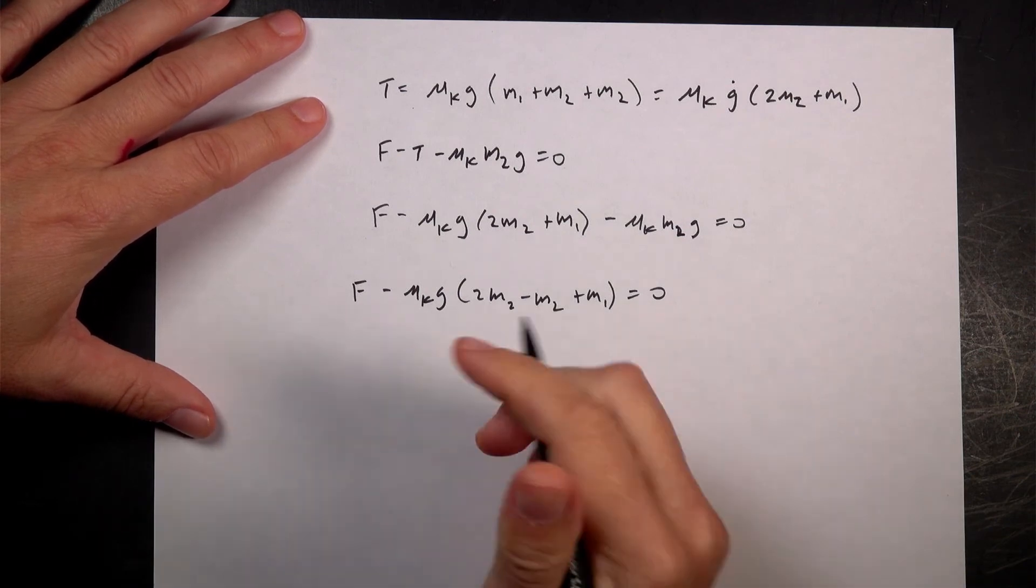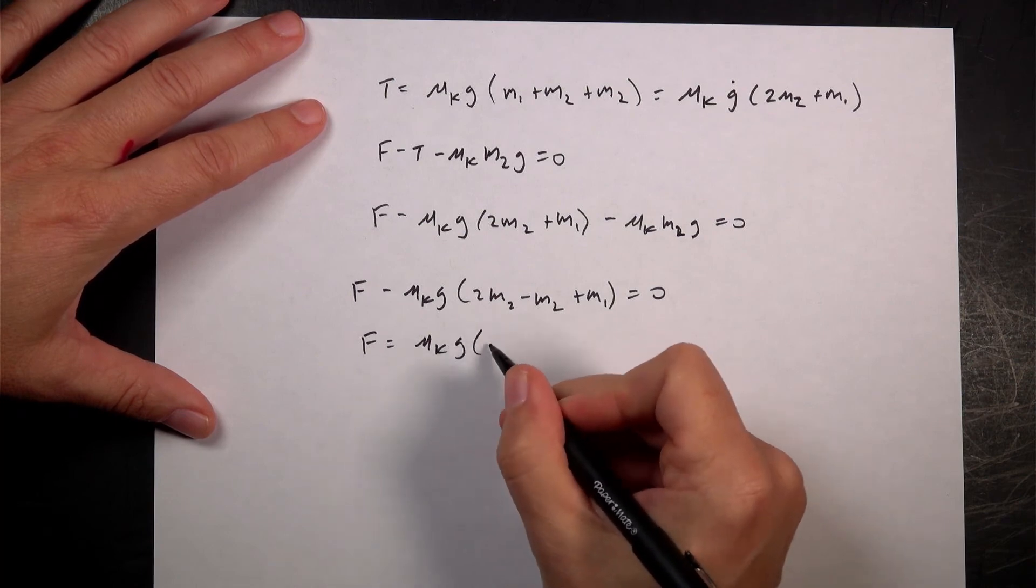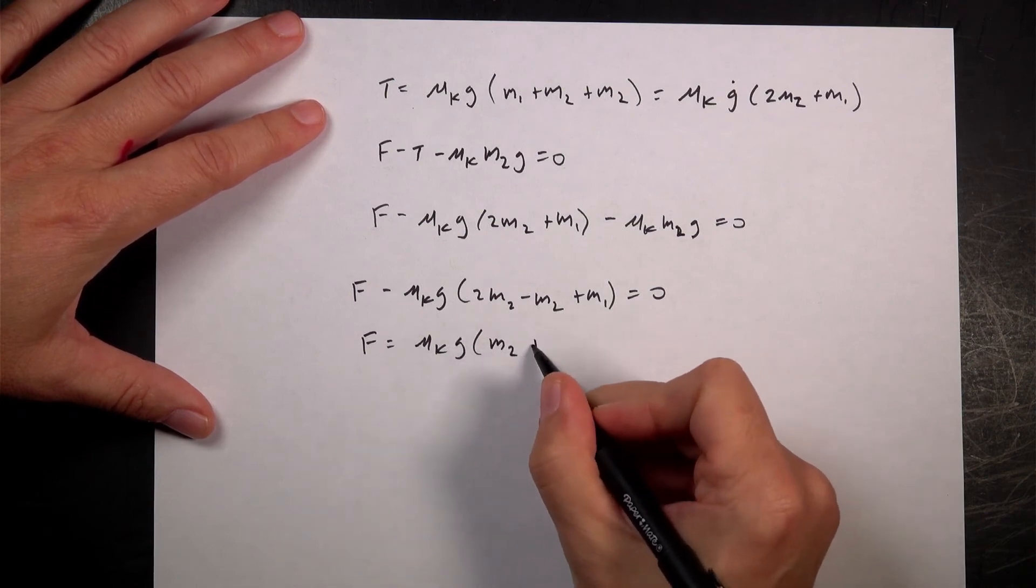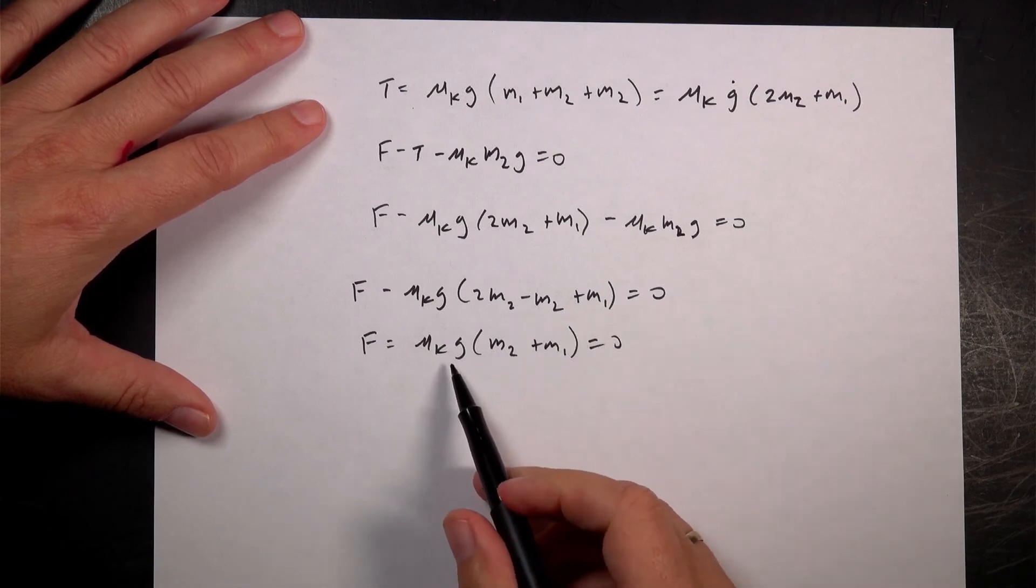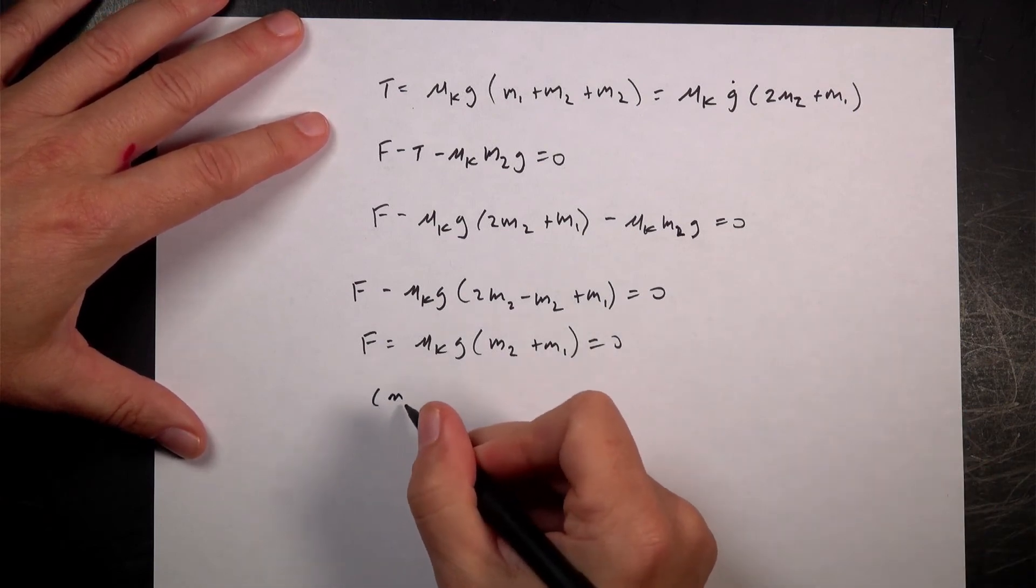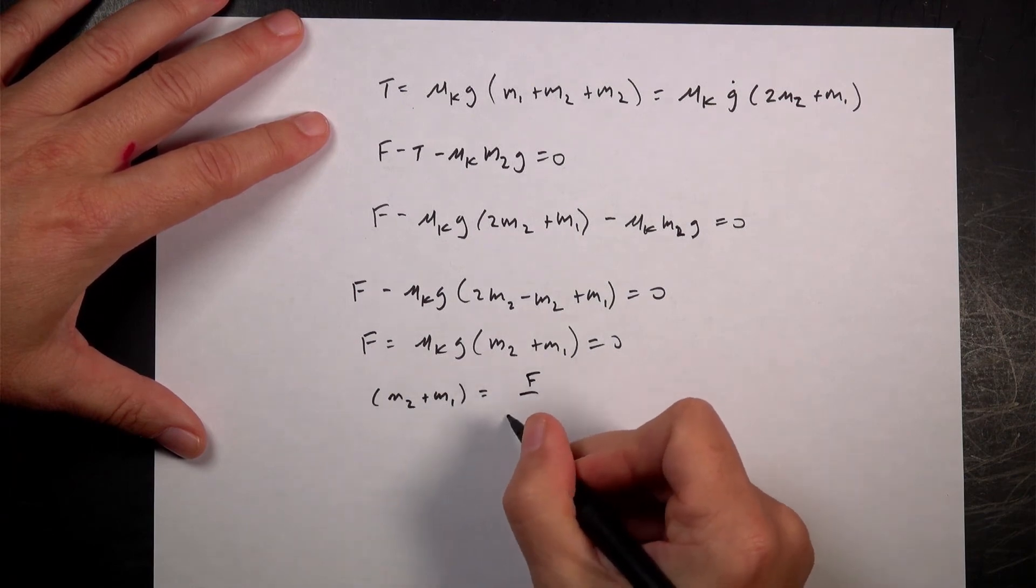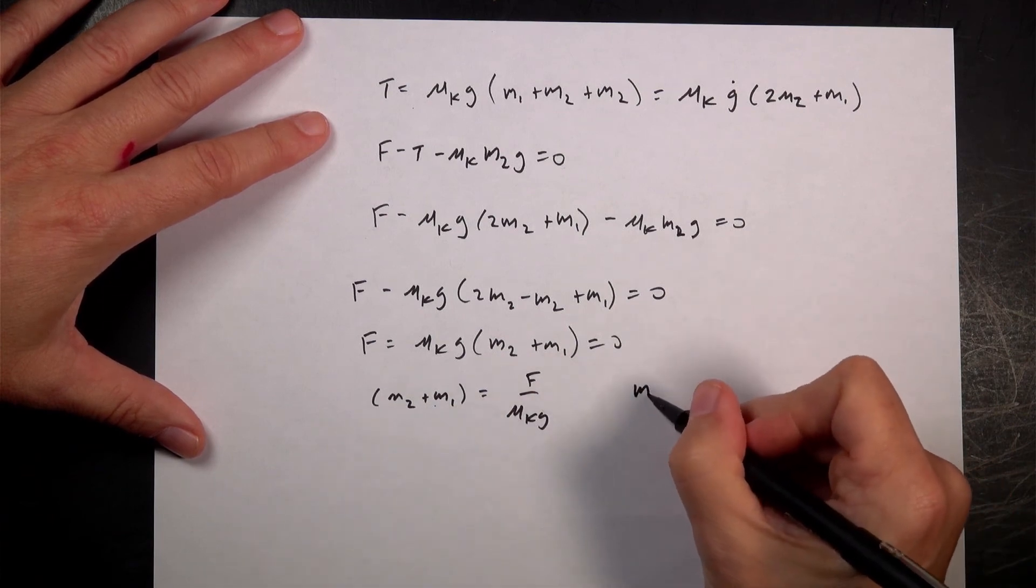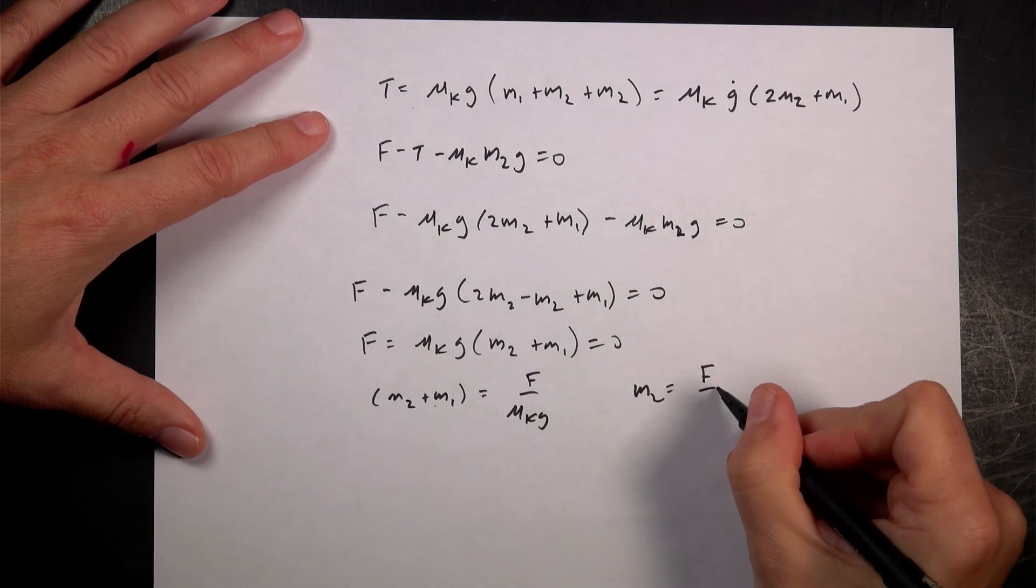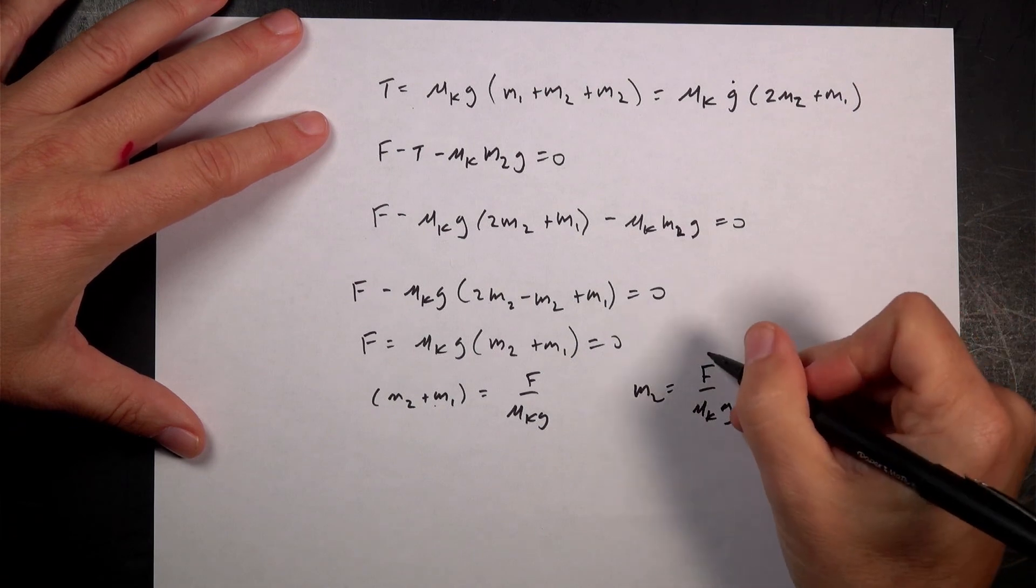Let's just move that to the other side. I get F equals mu K times G times (3M2 + M1). And then I'm going to divide both sides by mu K G. I get 3M2 + M1 equals F over mu K G. And then I can subtract M1 from both sides and I get M2 equals F over (3 mu K G) minus M1.